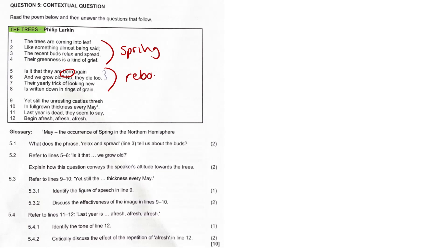Lines nine to twelve. Despite mortality, trees continue to renew themselves every year. These unresting castles, that constant renewal symbolizes their resilience. The repetition of afresh, afresh, afresh emphasizes hope, endurance, and the endless renewal of life.